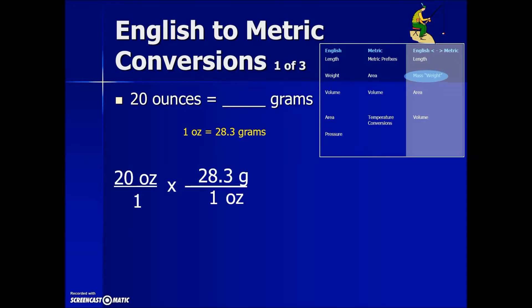When we simplify our fraction, we'll cancel out common factors in the numerator and the denominator, leaving us to multiply the fraction. Multiplying the numerator and the denominator, which is 1, doesn't affect our values. So the equivalent of 20 ounces turns out to be 566 grams.